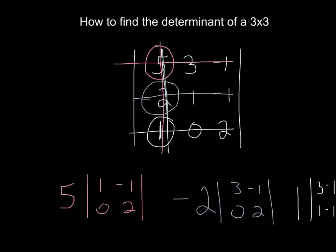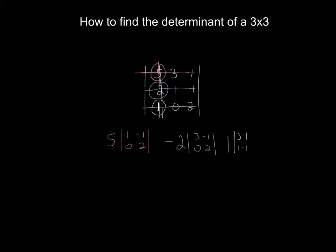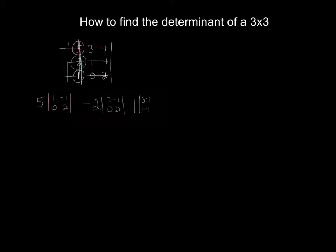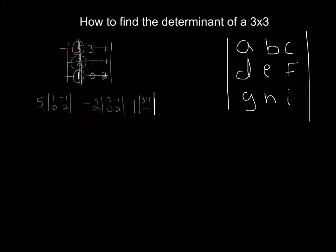So the next thing we need to determine is, do we add or subtract each of these three parts? Well, with a matrix, what you can do - I'm going to shrink that a little bit to put it out of the way so we can determine our signs. Say you had any old matrix and you wanted to find the determinant: A, B, C, D, E, F, G, H, I.